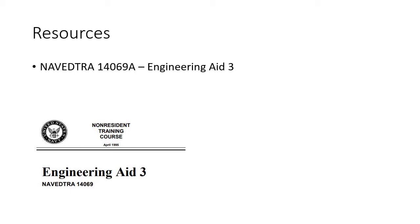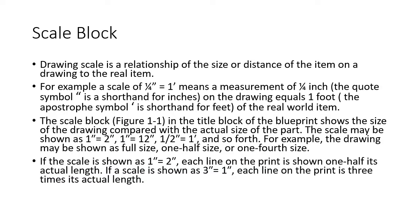Scale block. Drawing scale is a relationship of the size or distance of an item on a drawing to the real item. This would be like on a map. You can't have a map of the United States and have it full size. It's just not going to work. Where are you going to make a 3,000 mile cross map?